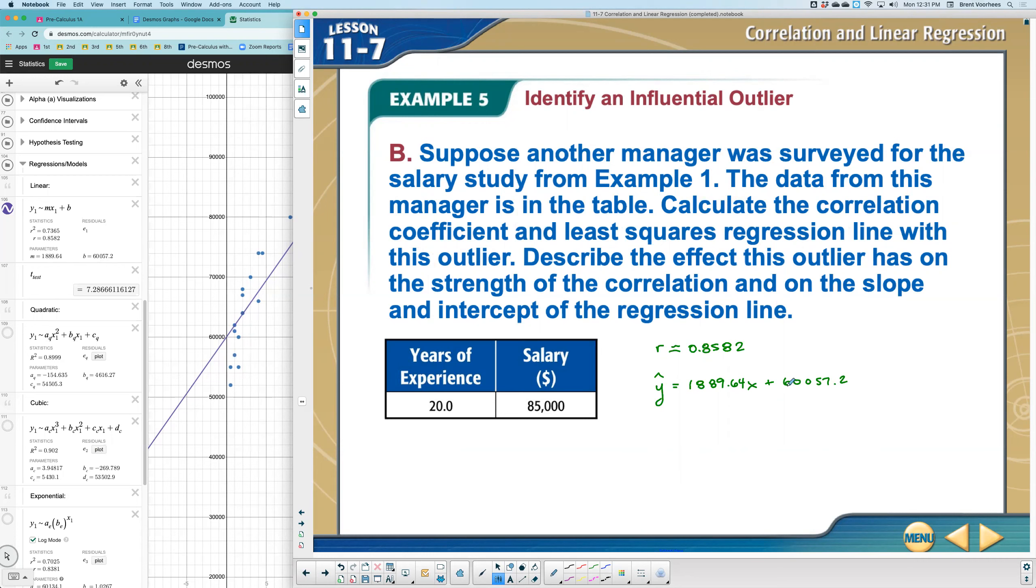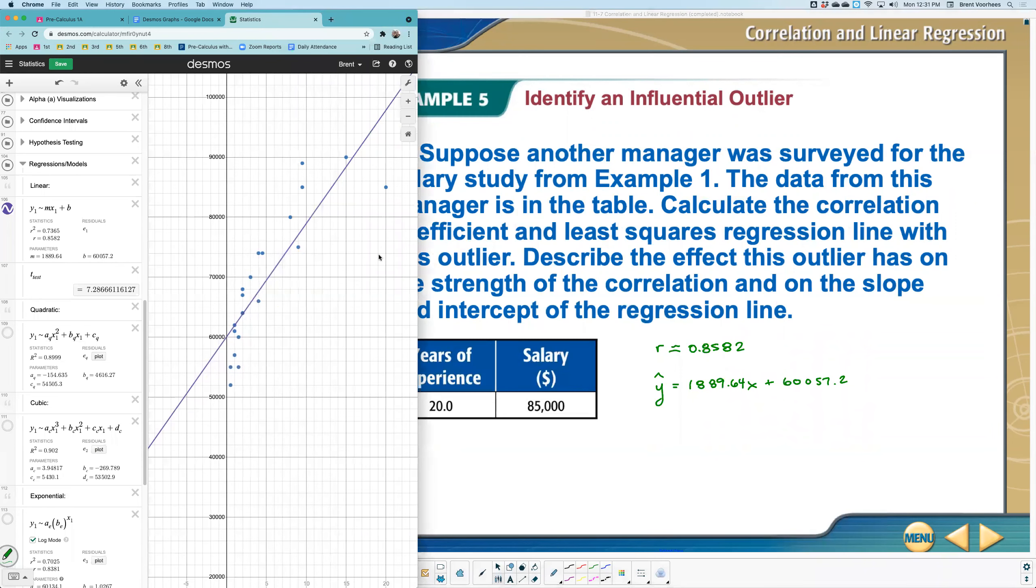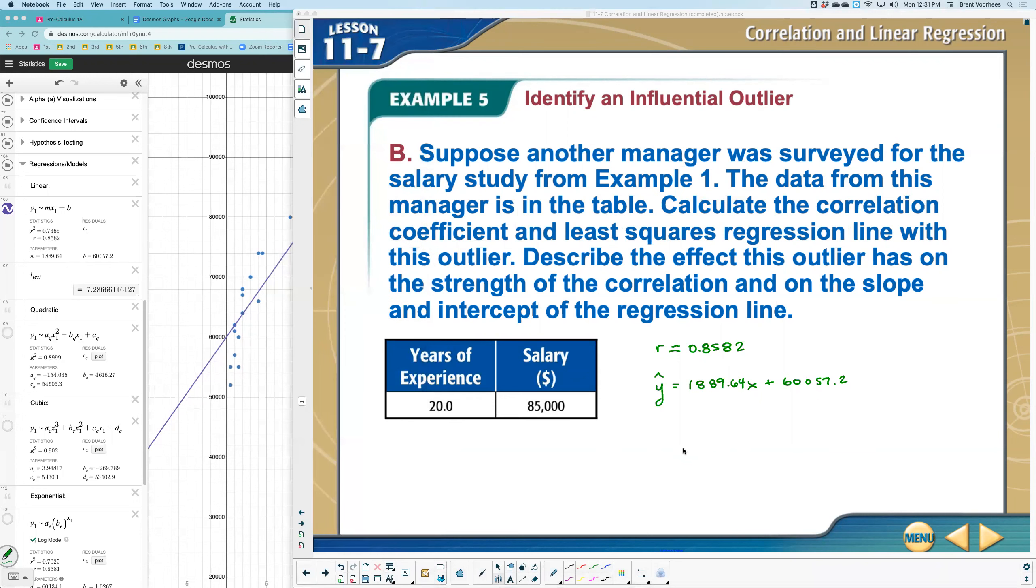Because this got off is because we had an outlier. The outlier is way off the line of what we're expecting to get. And so what effect does this outlier have on the strength of correlation? The correlation strength was weakened.